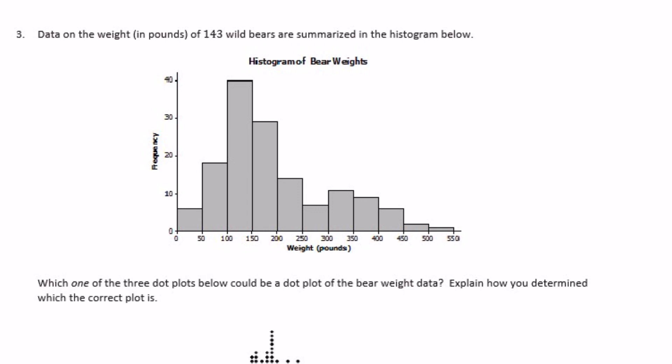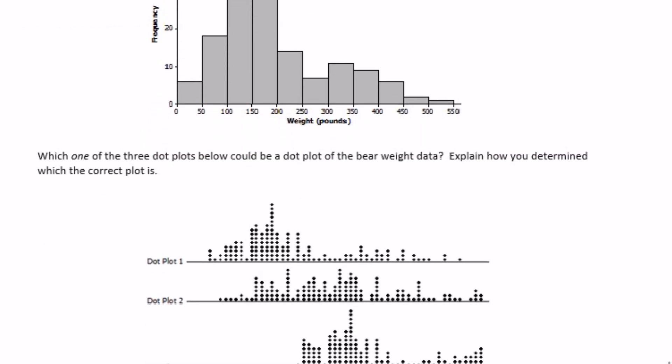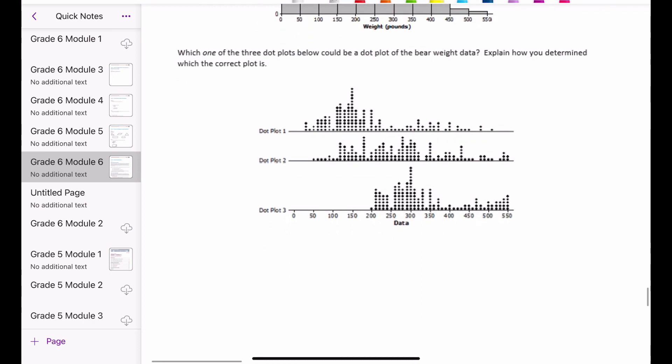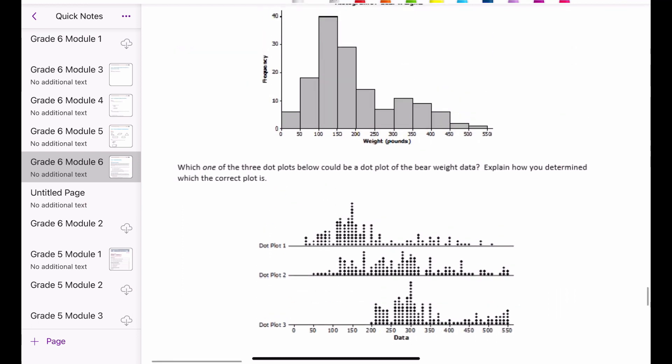Number 3. Data on the weight in pounds of 143 wild bears are summarized in the histogram below. Which one of the three dot plots below could be a dot plot of the bear weight? Explain how you determined which the correct plot is. Now they've given us dot plots for the information and we need to figure out which is the correct one. Let's start with number one.